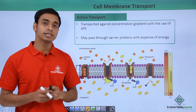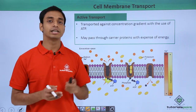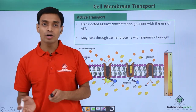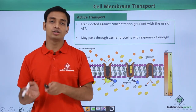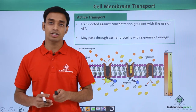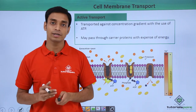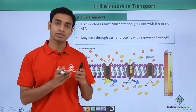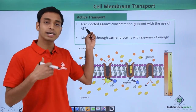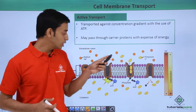The third process is active transport, which is absolutely different from the other two. Because it is active, it requires energy. Here, the movement of molecules occurs from lower concentration to higher concentration — opposite to simple diffusion. Movement against the concentration gradient requires energy, and in cells this energy comes from ATP molecules.